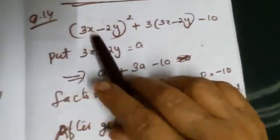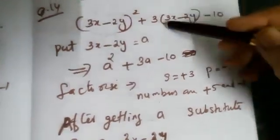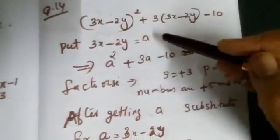Question No. 14: (3x-2y)²+3(3x-2y)-10. Here, put 3x-2y = a.